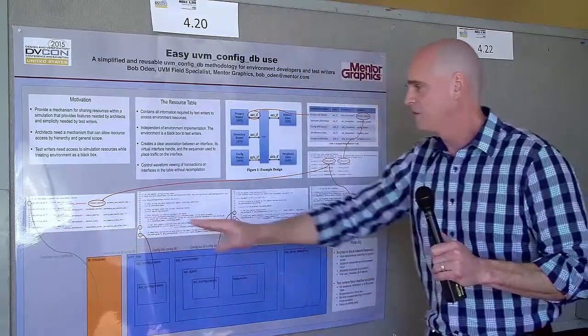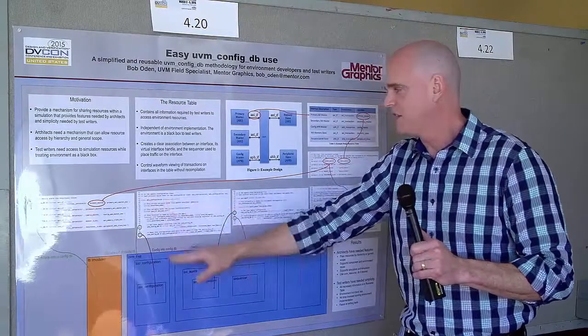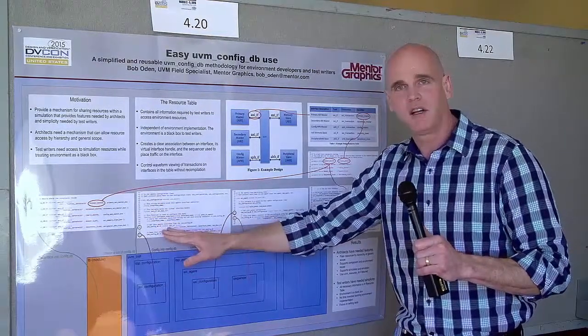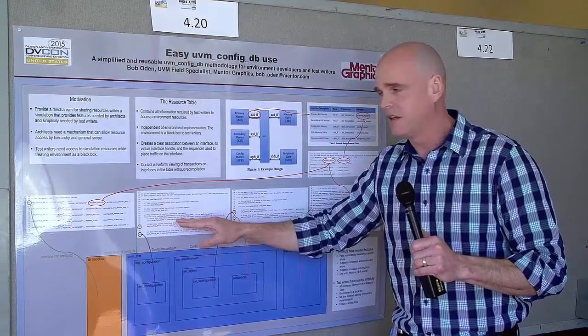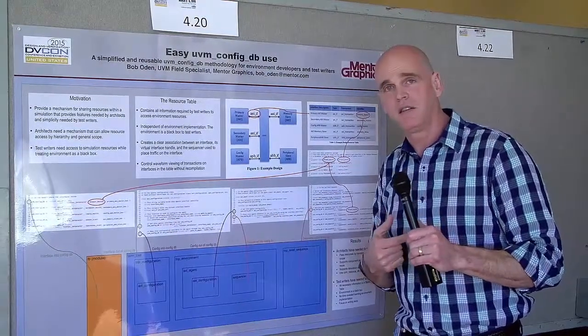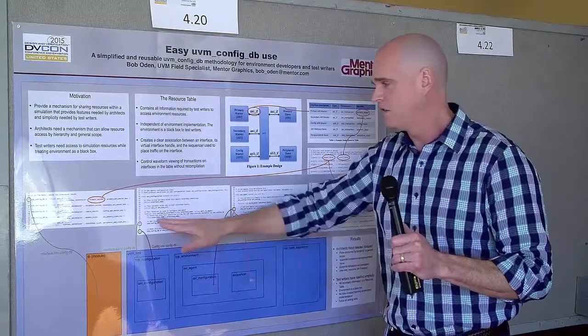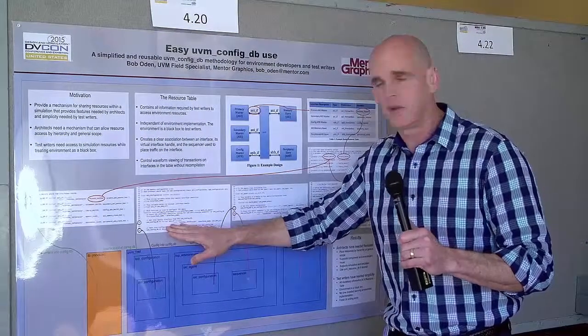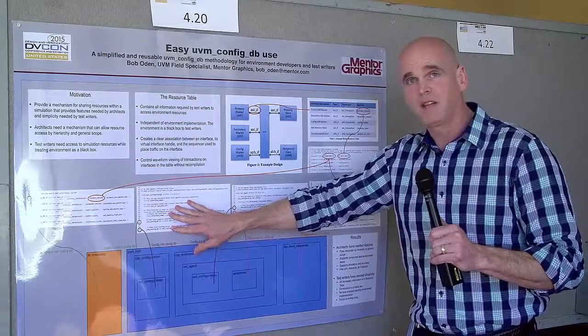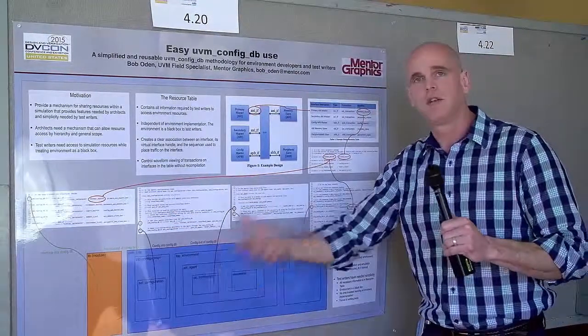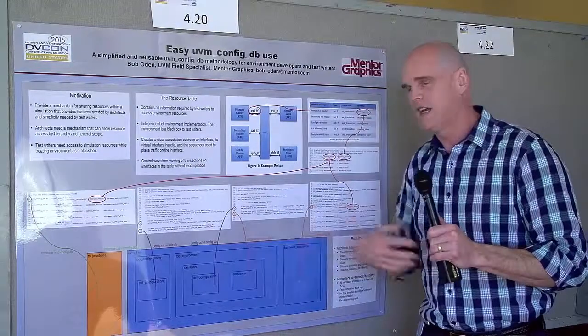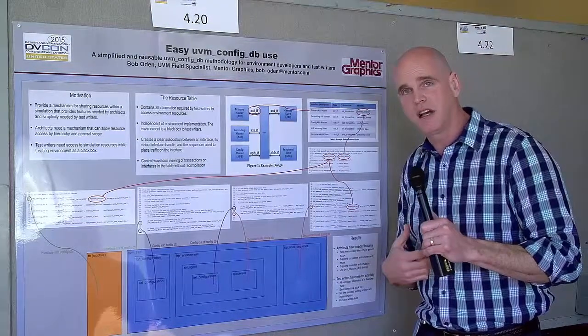That same string then is passed to the agent's configuration class as a variable so that that configuration class for the agent can pull the interface from the config database using that same generic scope. The interface configuration places itself in the config database for the agent to retrieve. Once the agent has retrieved his configuration class, at that point if the agent is active,